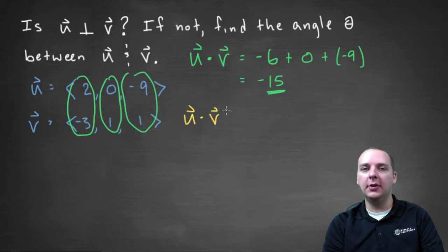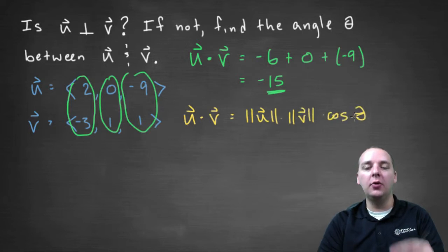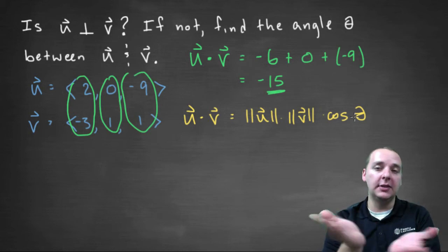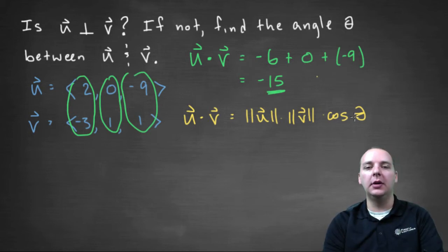This is an alternate definition for the dot product. The dot product is the magnitude of u times the magnitude of v times the cosine of the angle that is between them. If it's not ninety, then we should be able to figure out what it is.